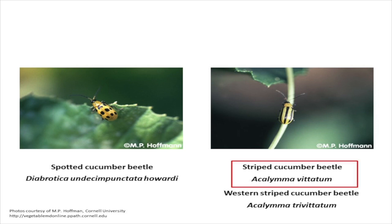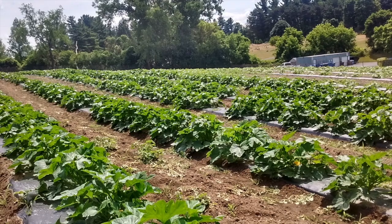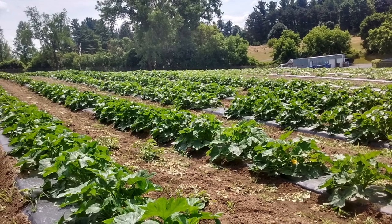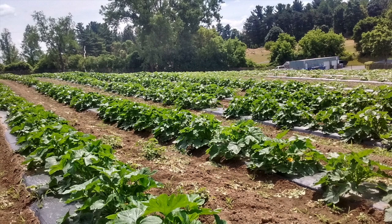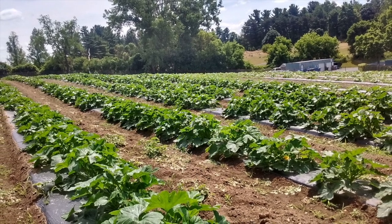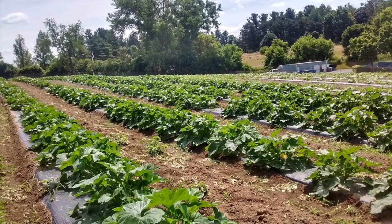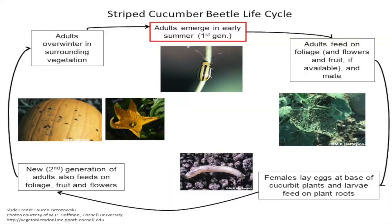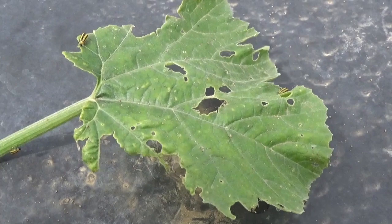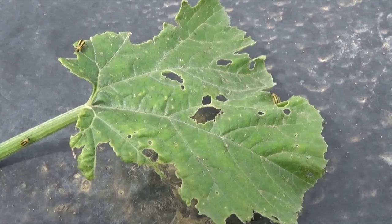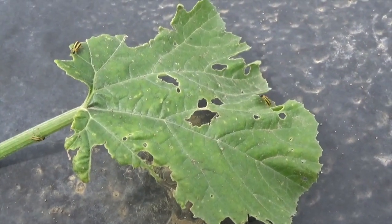This video will focus specifically on managing striped cucumber beetles. The striped cucumber beetle tends to attack farms on a particular schedule in the northeast, and successful management depends on knowing the life cycle of the insect. Early in the summer, the adult beetles emerge from the field edges where they have overwintered and begin feeding on the plants they find. The beetles can quickly defoliate young seedlings, which are particularly susceptible to feeding damage.